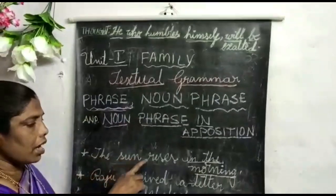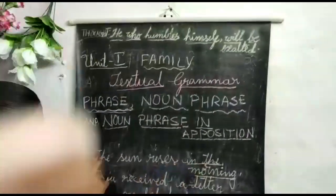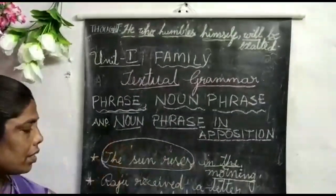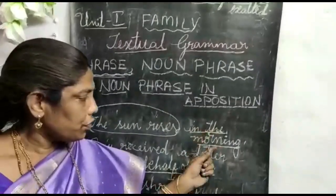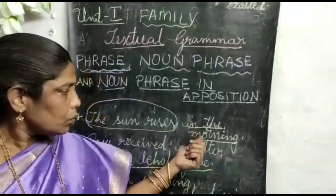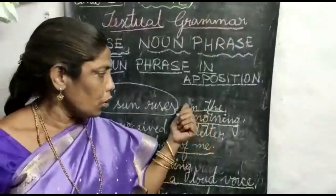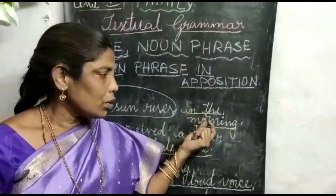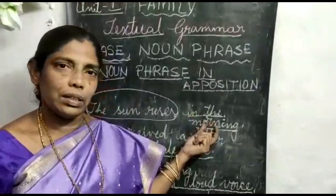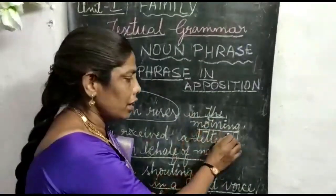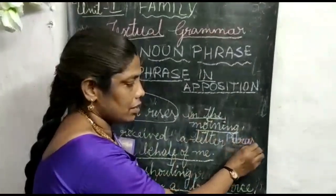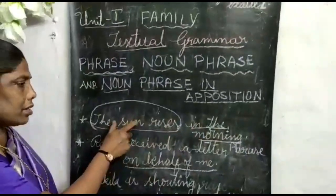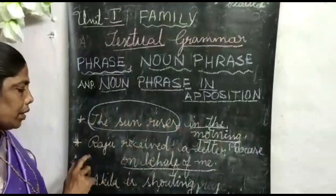The first example: The sun rises in the morning. In this sentence, if we observe the last few words — 'in the morning' — there is no subject, there is no predicate. It gives only a little meaning but not complete meaning. So 'in the morning' is a phrase in this sentence, and it is a part of a sentence.